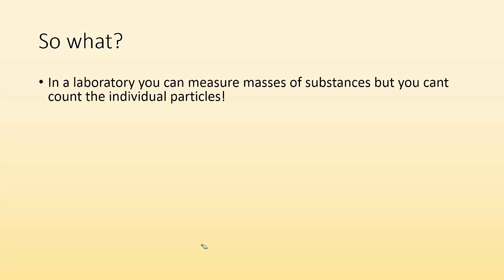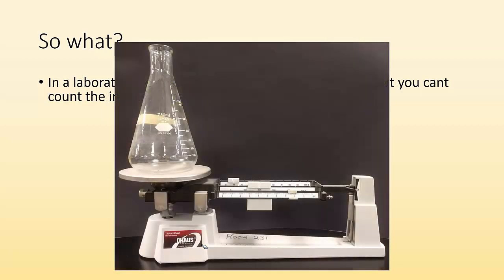In a laboratory, we can measure masses of substances, but we're not actually going to count individual particles. Could you imagine — go get me a mole of sugar and you have to count every single molecule up to 6.022 times 10 to the 23rd? That'd be obnoxious. Instead, we use a balance, figure out the molar mass, and mass out that much. Once I have 180 grams of it, I've got a mole of sugar, based on its formula.